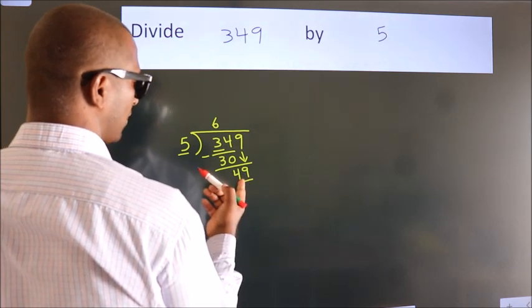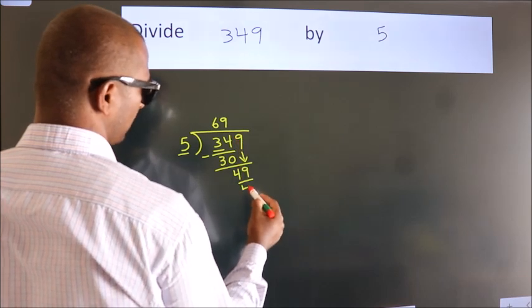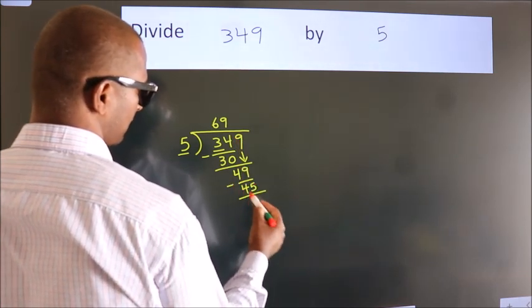A number close to 49 in the 5 times table is 5 times 9, which equals 45. Now we subtract. We get 4.